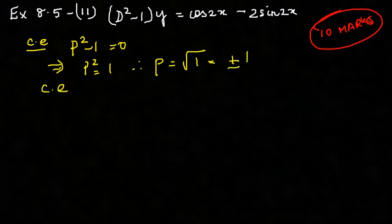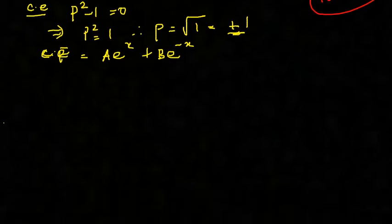So my characteristic equation can be written—sorry, not the characteristic equation, the CF can be written as Ae^x plus Be^(-x) because here there are two different roots, plus 1 and minus 1. Okay, now let's get started with finding the particular integral.